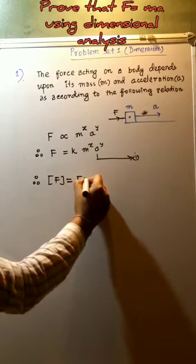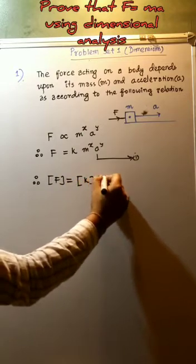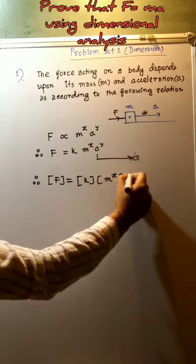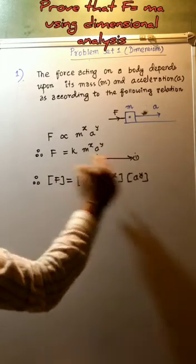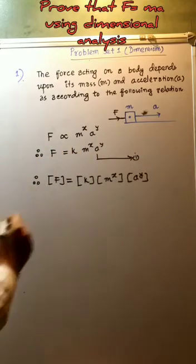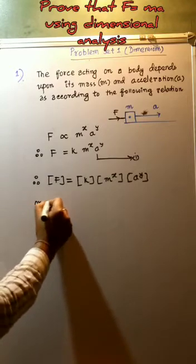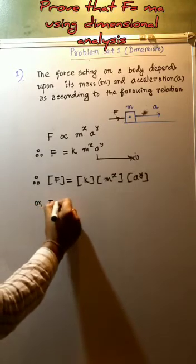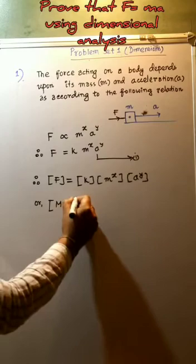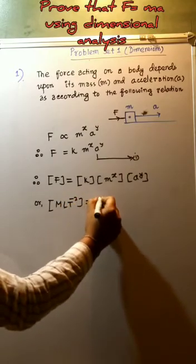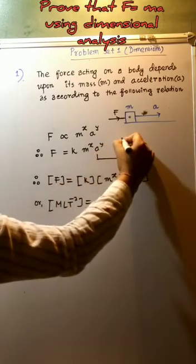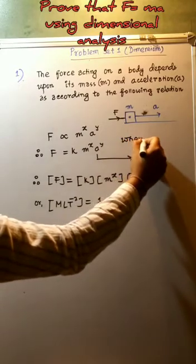Therefore, the dimension of force equals the dimension of K multiplied by the dimension of M to the power X and the dimension of A to the power Y, as F equals K·M^X·A^Y. The dimension of force is M·L·T to the power minus 2, and the dimension of K is 1 because K is the constant of proportionality.